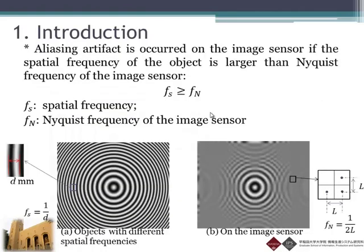First of all, I'd like to talk about what is the aliasing artifact. Aliasing artifact is a kind of artifact that occurs on the image sensor if the spatial frequency of the object is larger than the Nyquist frequency of the image sensor. Here we have an object with different spatial frequencies. The spatial frequency is defined by the inverse value of the distance d, where d represents the distance of one cycle.